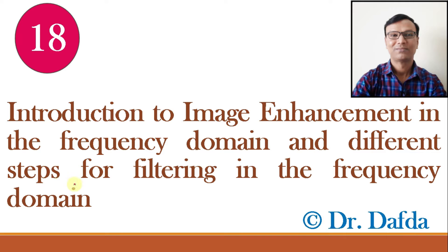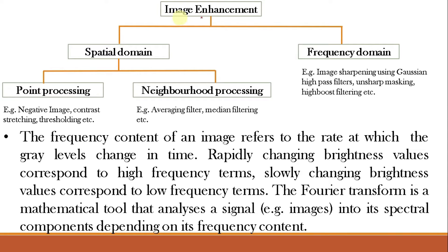We will study different stages or steps for filtering in the frequency domain. We have learned that image enhancement can be done in the spatial domain as well as in the frequency domain. Spatial domain techniques include point processing and neighborhood processing techniques — filters like low pass filters, high pass filters, median filters, etc. In the frequency domain, we can apply techniques like low pass filtering, high pass filtering, unsharp masking, high boost filtering, homomorphic filtering, etc.